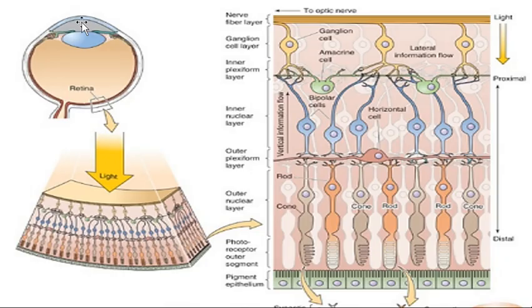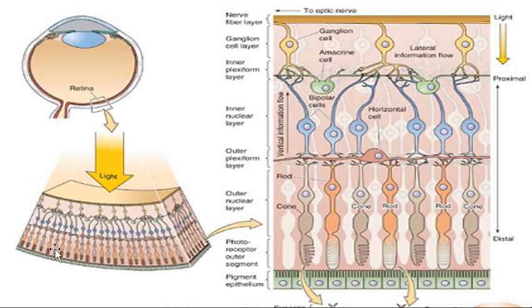Now let's see what the retina looks like in a microscopic view. The retina has a number of layers, and the most important thing to know is the arrangement. Photoreceptors are not present toward the vitreous humor — where the light is coming from — but instead are present in the innermost layer toward the choroid. So light first penetrates through all the layers and then the photoreceptors sense it.